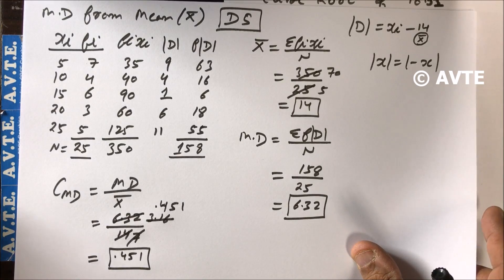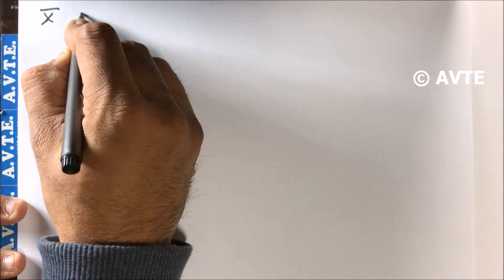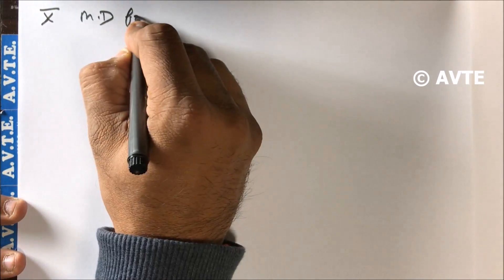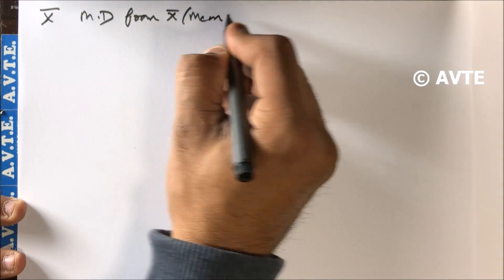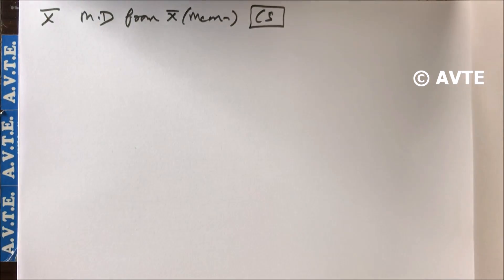Now the next part is how to find mean deviation from mean for continuous series. Continuous series is the last topic of finding mean deviation from mean. We have a question to solve.